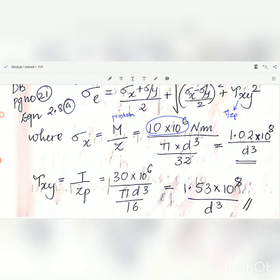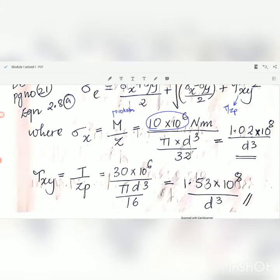Similarly, we can find tau xy because the torsion will be producing a shear stress. Tau xy equals t by zp. Torque is given as 30 kNm, so 30 multiplied by 10 to the power 6 divided by zp equals pi d cubed by 16.